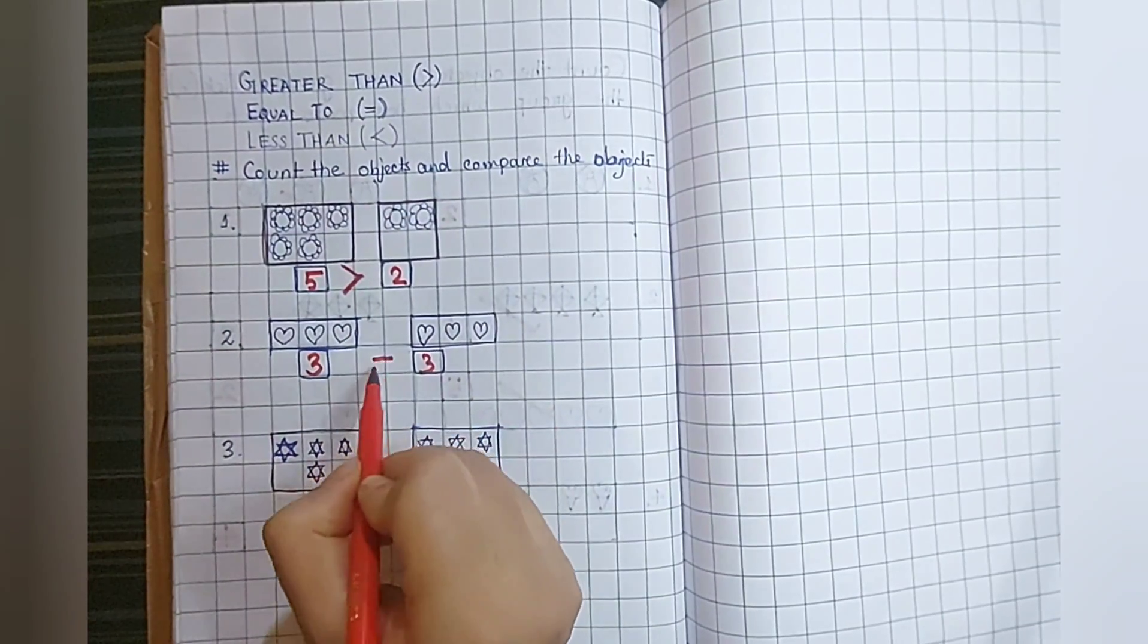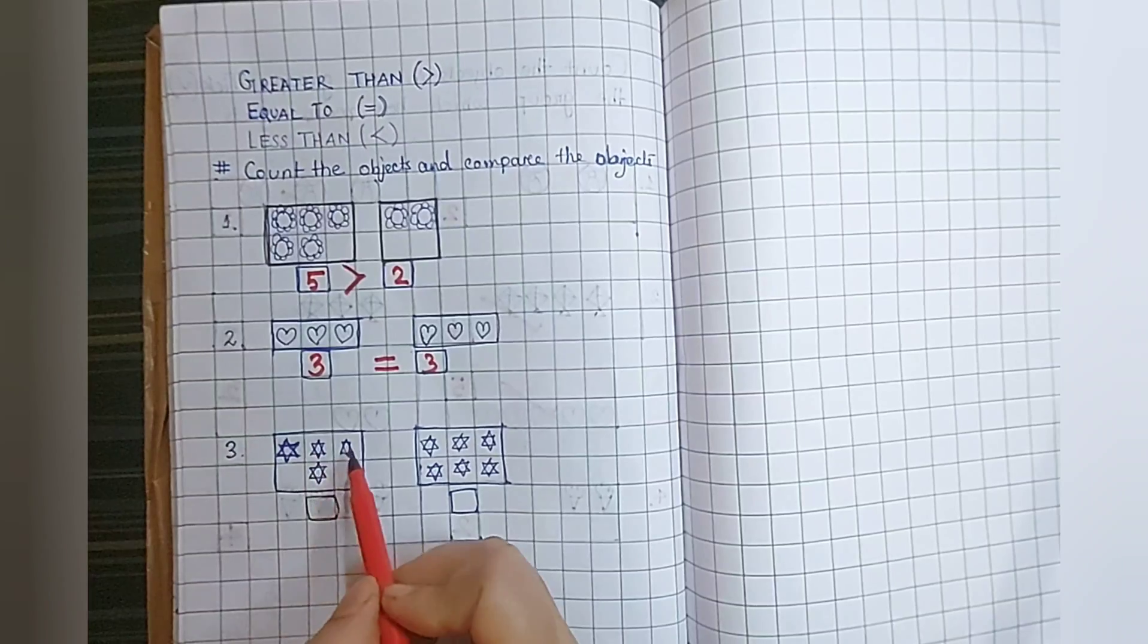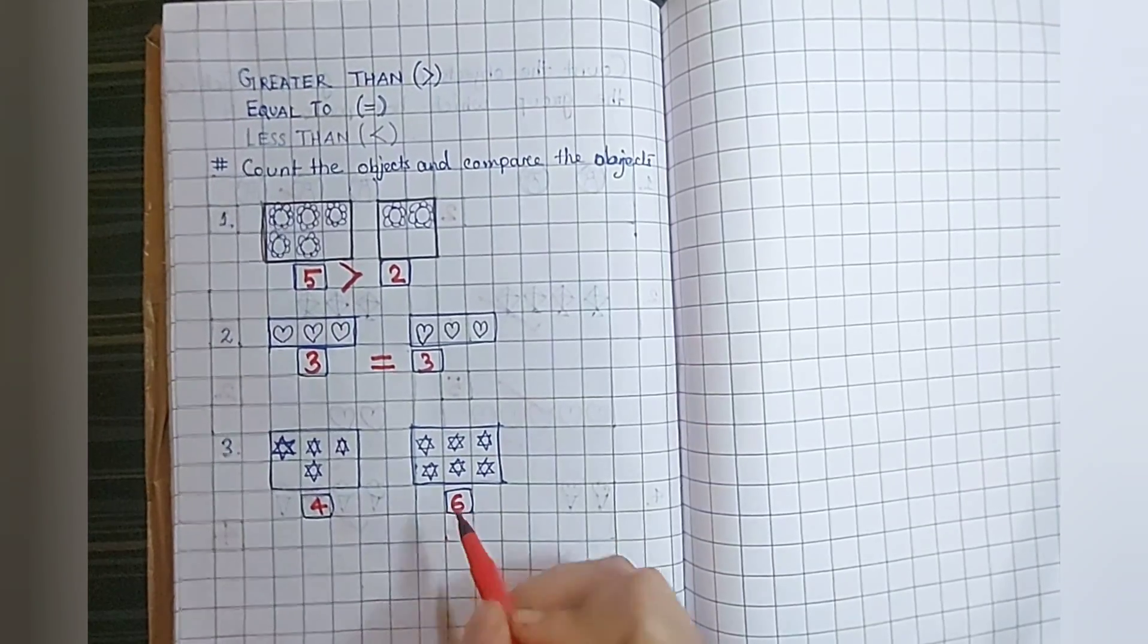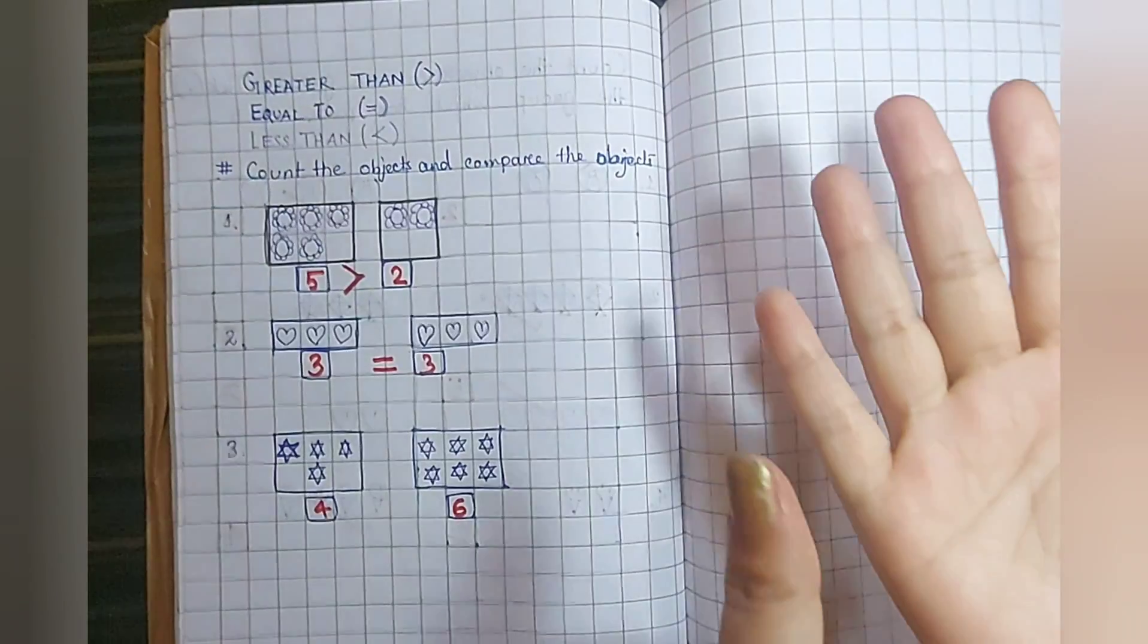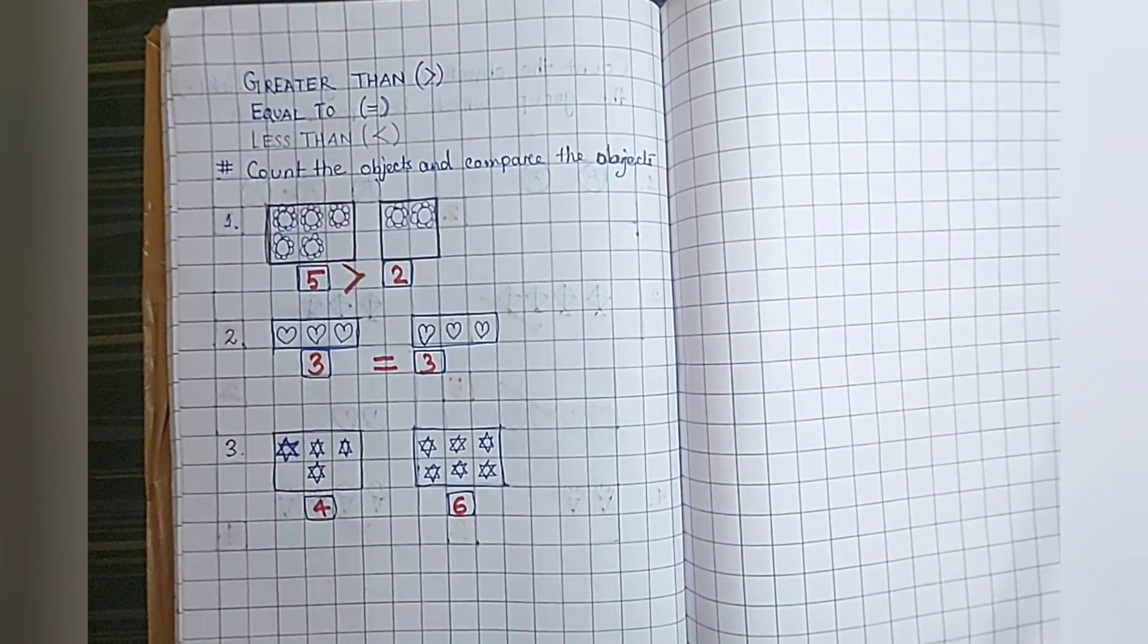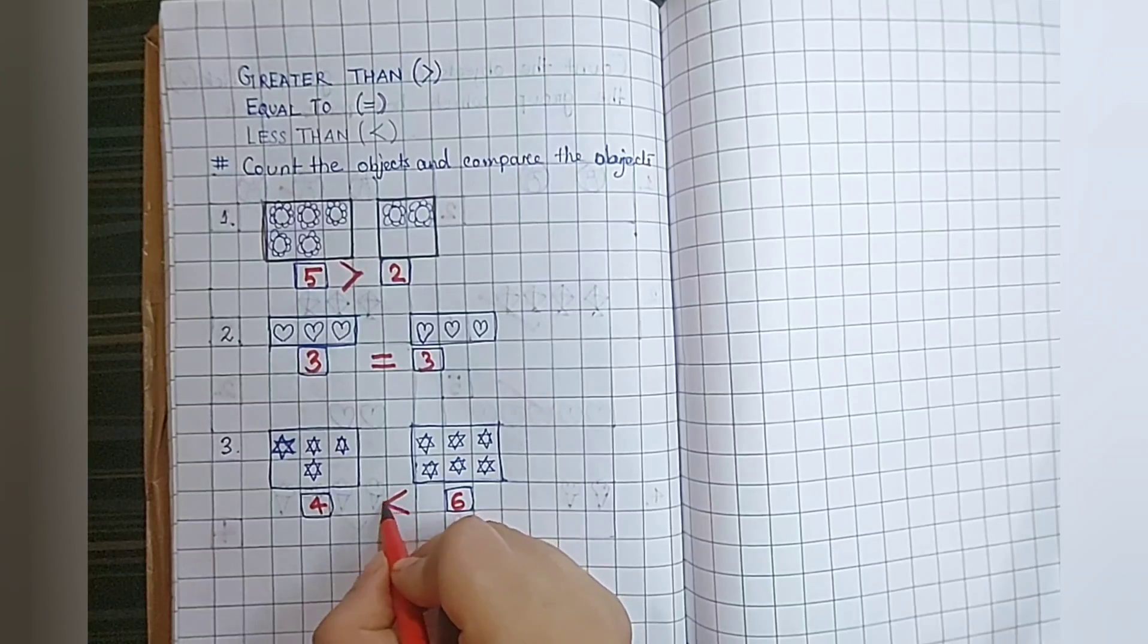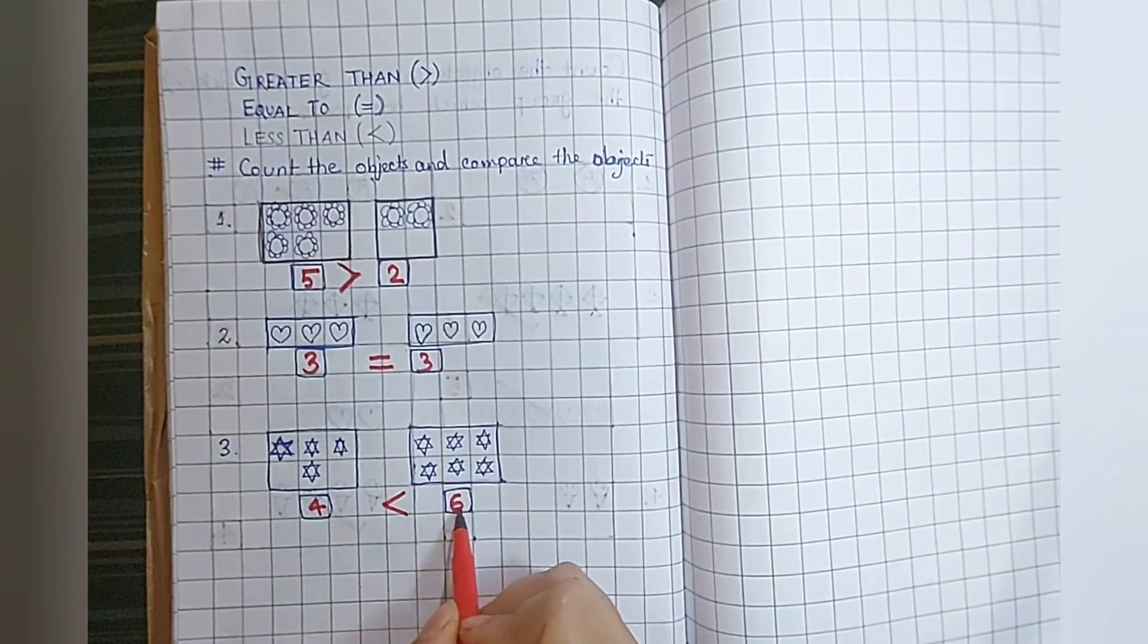Next, again counting the stars. One, two, three, four. One, two, three, four, five, six. There is four and another group is six. Which one, which group is more? Six. Second one. That means the alligator will eat more because he is very hungry. That's the symbol we used. This one. The alligator will eat more.